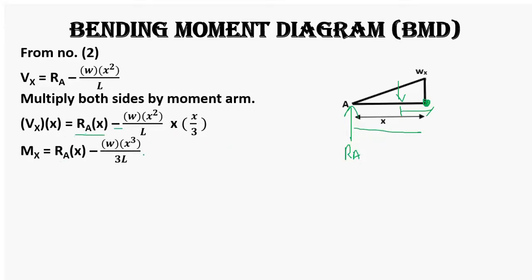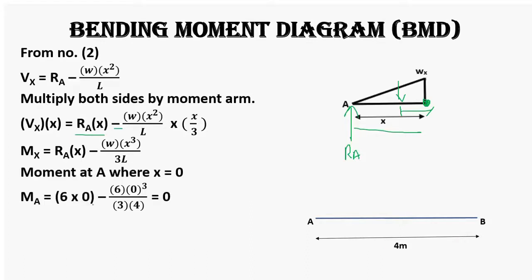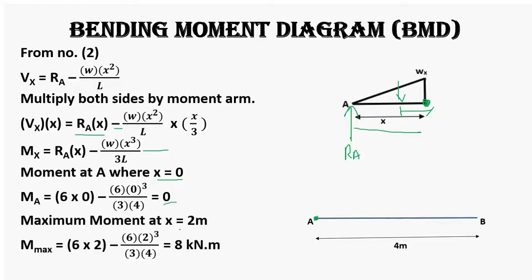After simplifying, the bending moment equation is: M = RA·x − Wx³/(3L). For the bending moment diagram, at support A (x = 0), the bending moment is 0. For maximum moment, we substitute x = 2 meters, because the shear force is zero at that point. The maximum bending moment is 8 kilonewton-meters at the center of the beam.